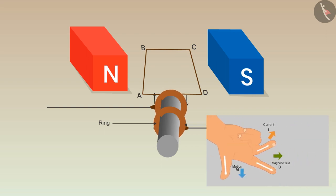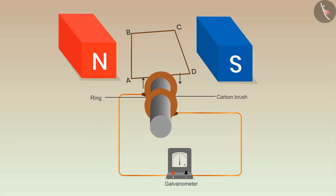Likewise, we can find the direction of induced current on the arm CD, which is in the outwards direction. A galvanometer can be used to show the flow of current in the external circuit.